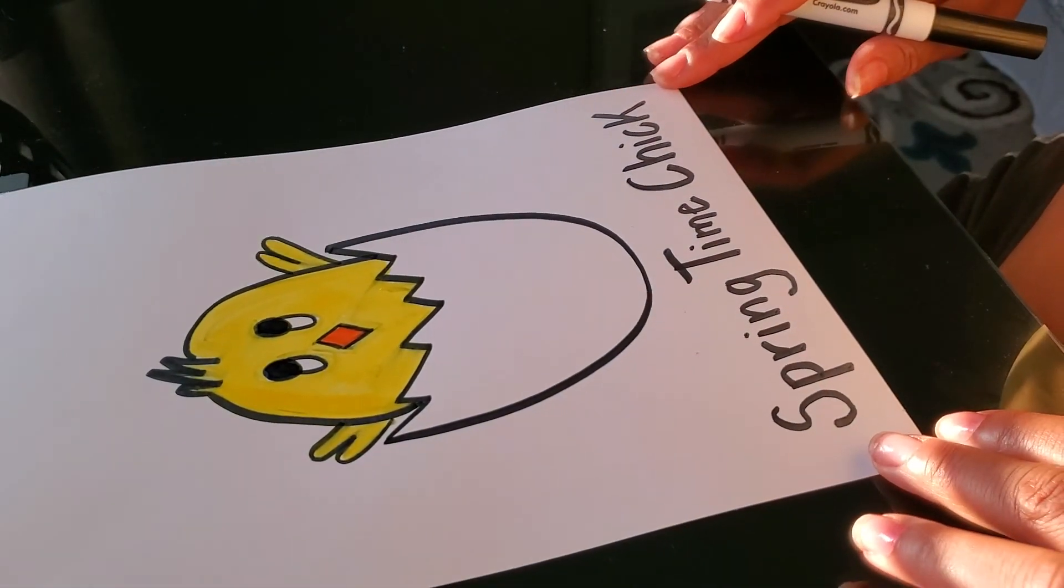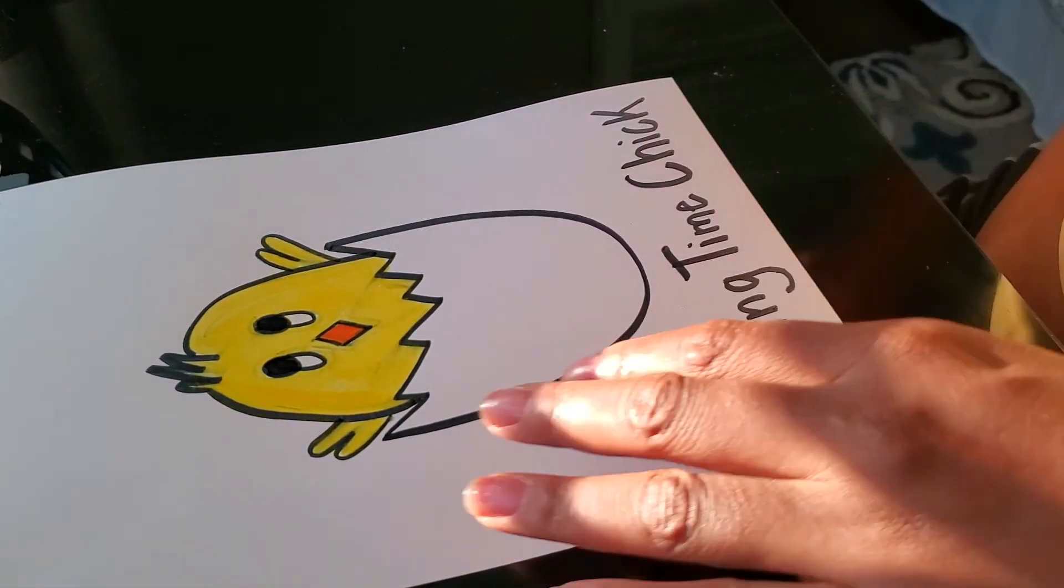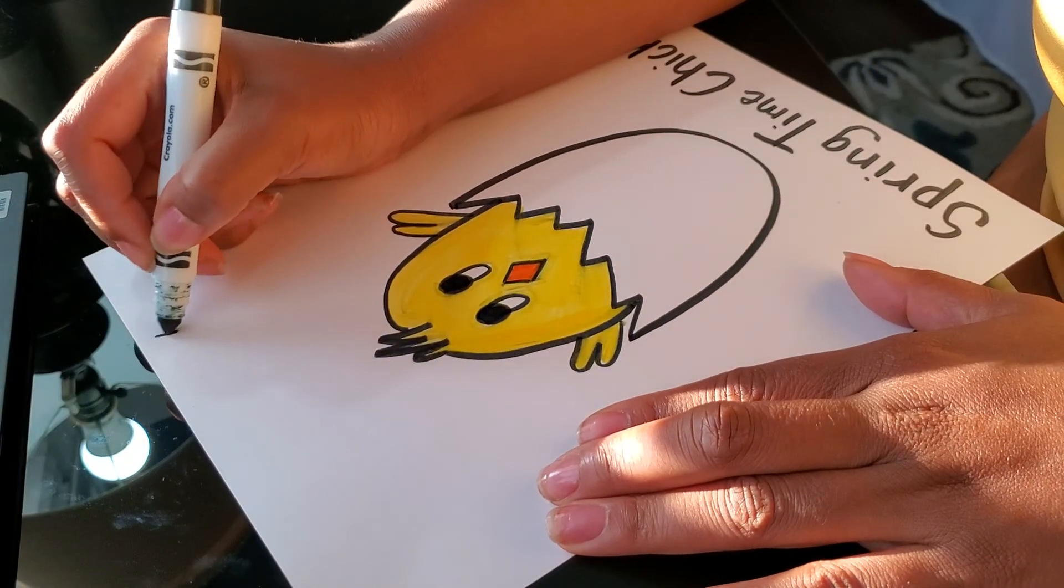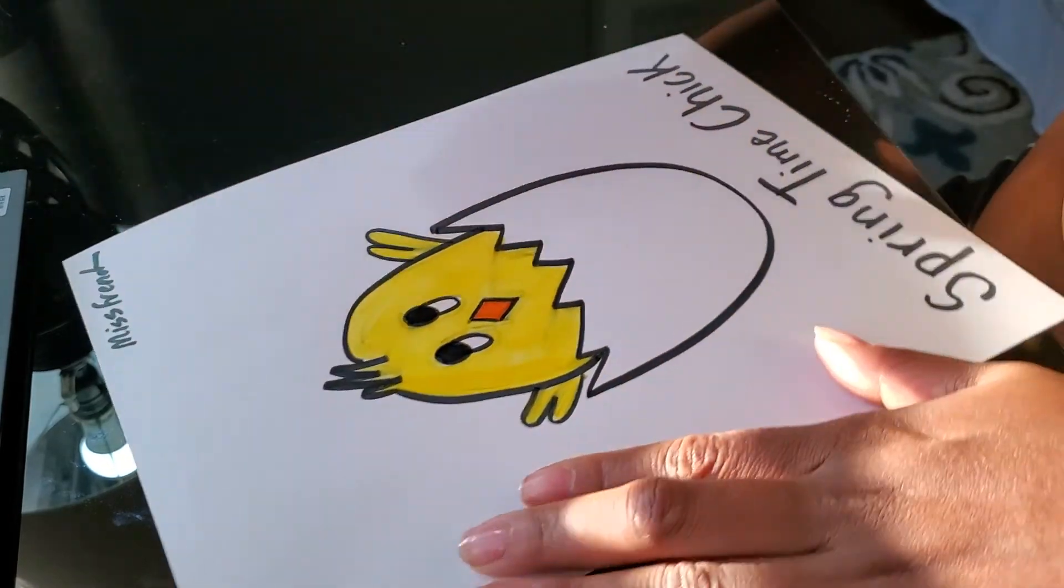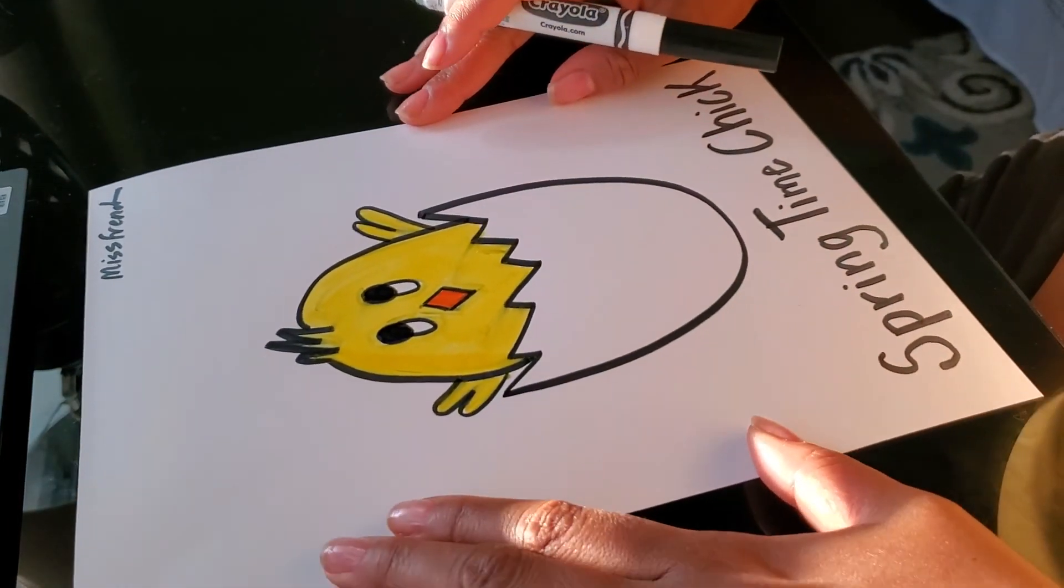And there you have it, your springtime chick. When you're finished, you can write your name on the back of your paper or really small at the top or the bottom if you have space. And thank you.